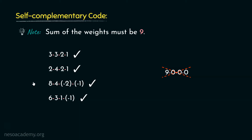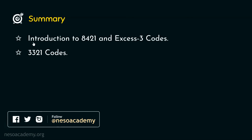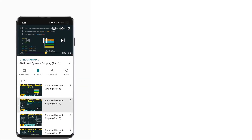As homework, try to find out the encoding techniques for the other three self-complementary codes using the logic we observed for the 3321 codes. So in this session, we were first introduced to the 8421 and XS3 codes, and thereafter we observed the 3321 codes, through which we acquired the concepts of self-complementary codes. In the next session, we will observe some numerical problems based on the concepts learned today. Thank you all for watching.